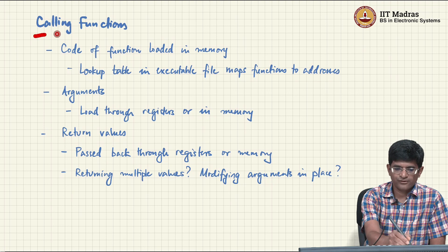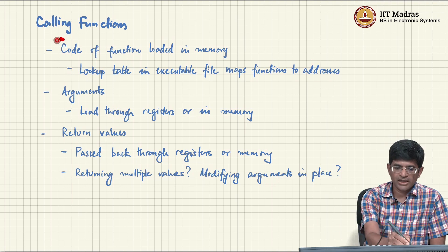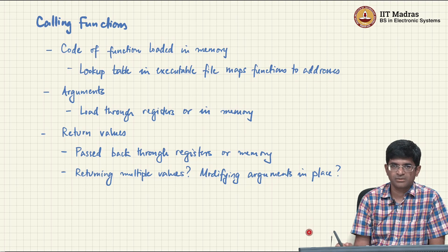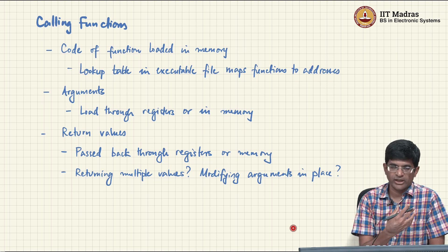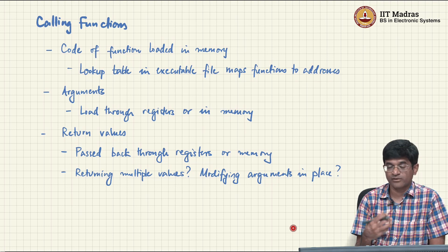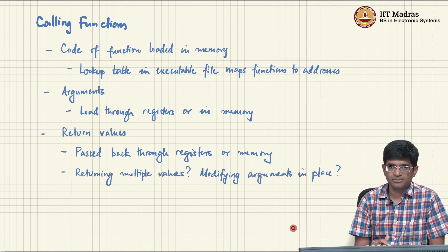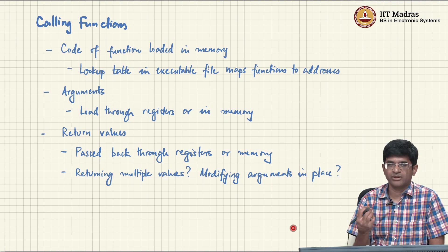The terms we use are typically either 'call' or 'invoke' a function — both mean the code corresponding to that function has to be loaded somewhere in memory. In practice, the compiler produces object code for each C file, then a linker takes all those object codes and puts them together into an executable file. When you run that program, the operating system loads the executable code into memory and updates entries that tell the system where to find a given function.